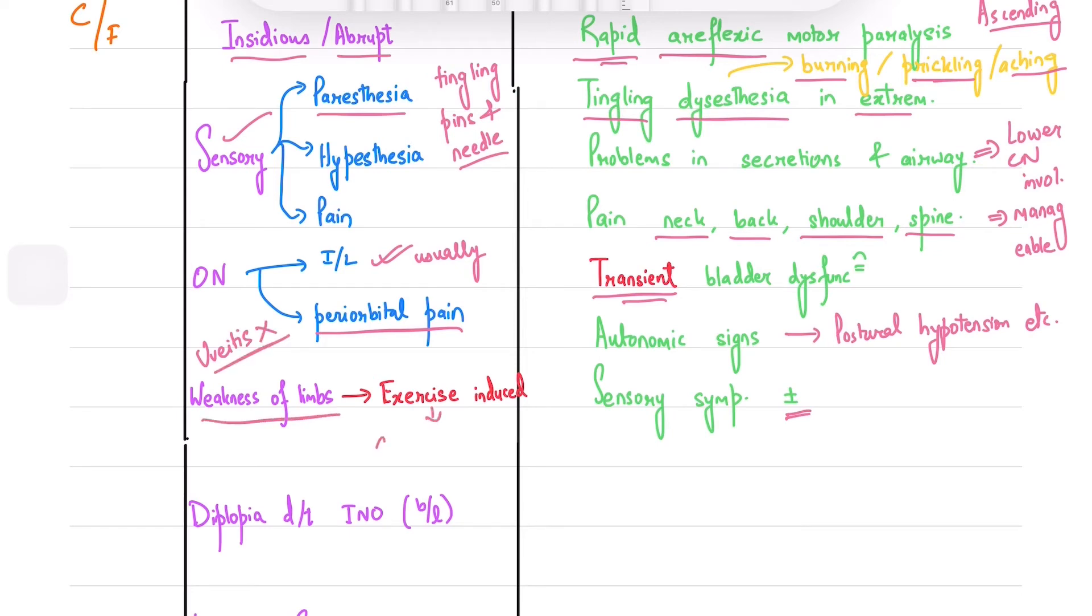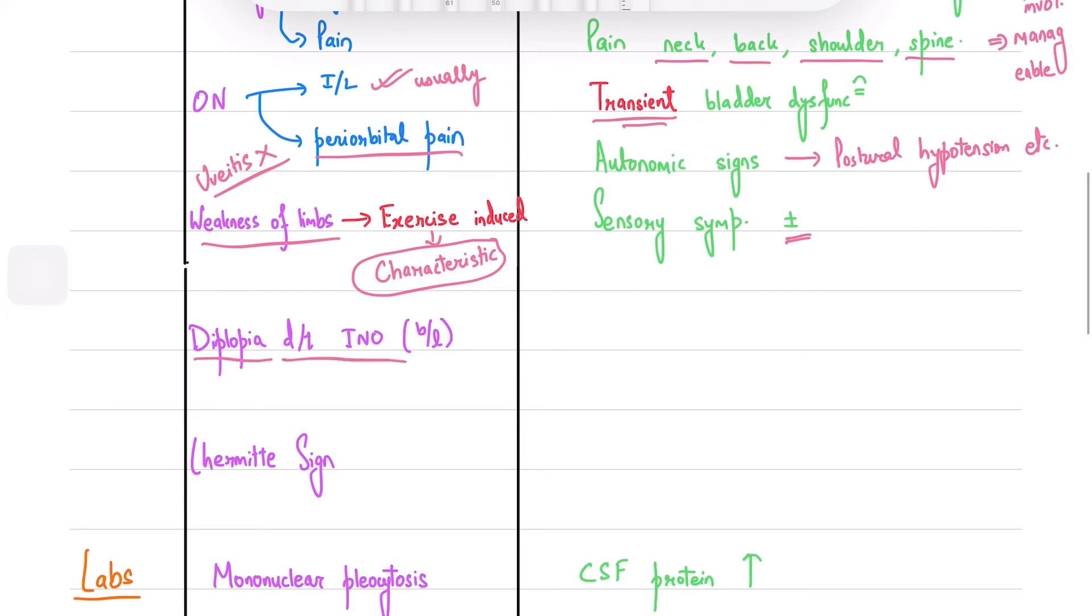Weakness of limbs is another sign you should look for and exercise-induced weakness is characteristic of MS. Diplopia due to internuclear ophthalmoplegia is seen and bilateral INO is suggestive of MS.